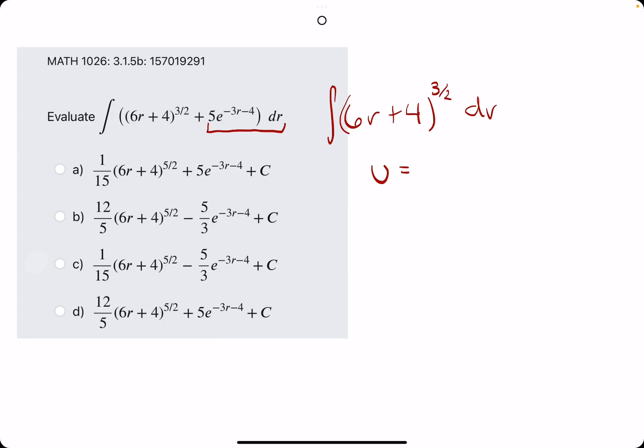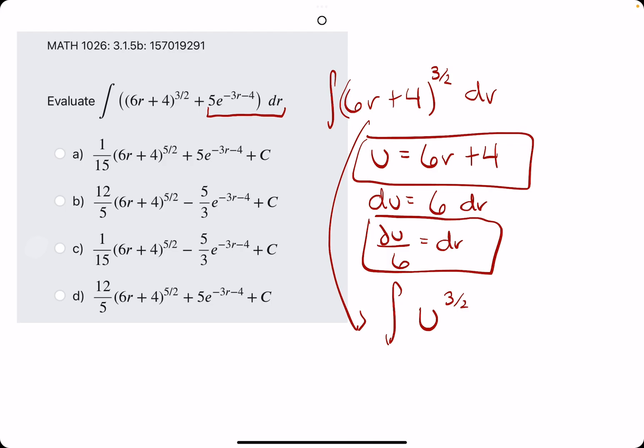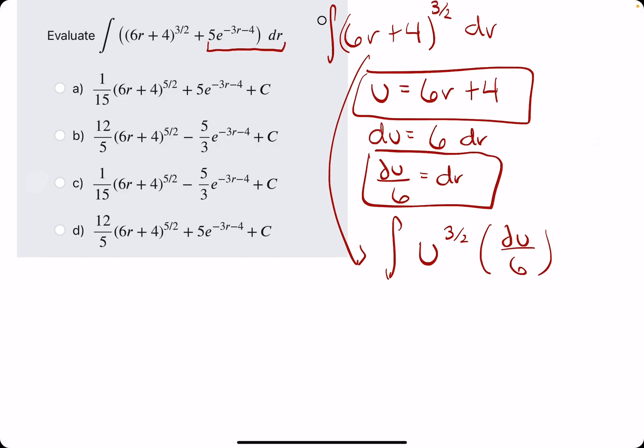Using u-substitution, we'll identify our u as whatever is inside the parentheses being acted on by some other piece, the 3 over 2 exponent. Find du, which is the derivative of u, so just 6. Tack on dr, just like tacking on dx. Solve for dr by dividing by 6. And then rewrite this integral in terms of u's and du's. So we have u to the 3 over 2. We replace dr with du over 6. So all together, we have 1/6 u to the 3 over 2 du in the integral.